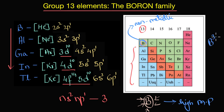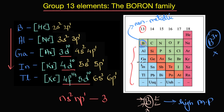Boron chemistry is predominantly non-metallic in nature. For example, boron does not form cations in aqueous solutions, and because of its high charge-to-size ratio, boron compounds are predominantly covalent in nature. We will get back to boron chemistry later, but we will study boron as a non-metal in this course.